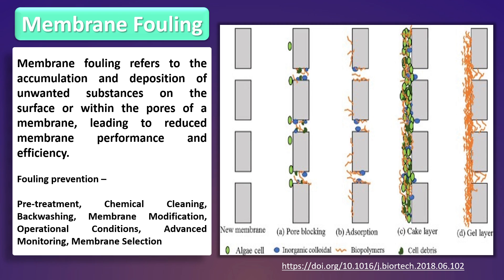Backwashing: in certain membrane systems, backwashing is used to reverse the flow through the membrane, dislodging accumulated particles and materials. Membrane modifications: surface modification and coatings can be applied to the membrane to reduce fouling by altering its hydrophilicity, surface charge and anti-biofouling properties. Operational conditions: adjusting operational parameters such as flow rate, pressure and temperature can influence fouling behavior.